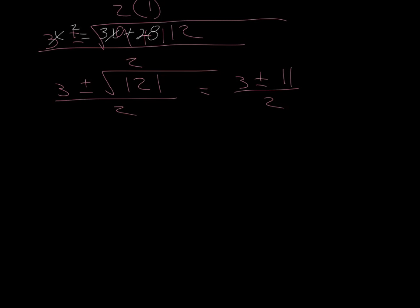So there is my problem. Here's my answer so far. Notice this is 3 plus or minus, so that means we have two answers: 3 plus 11 over 2 and 3 minus 11 over 2.